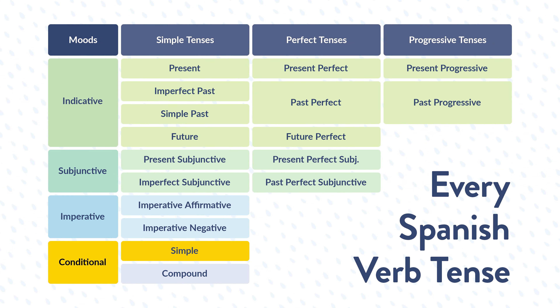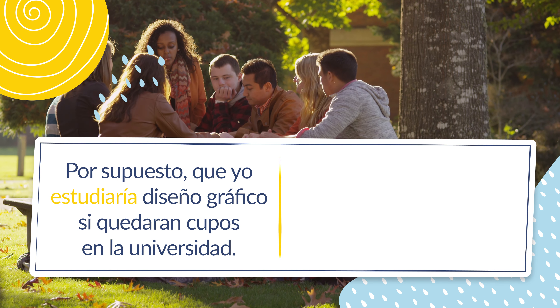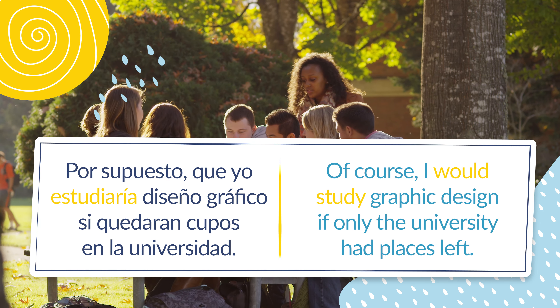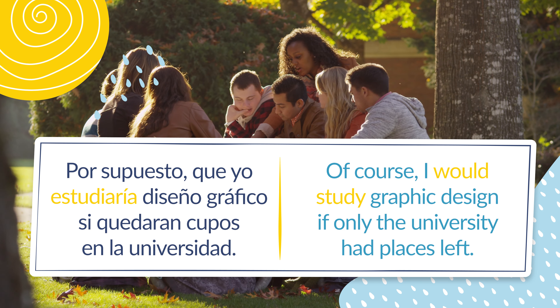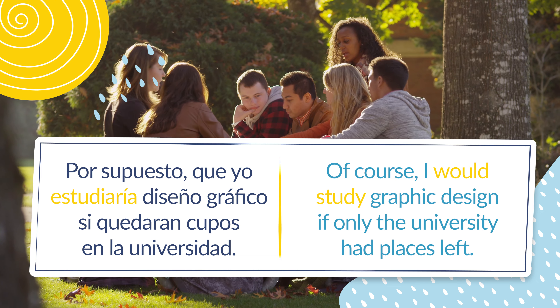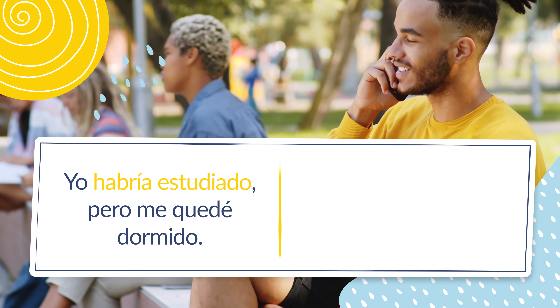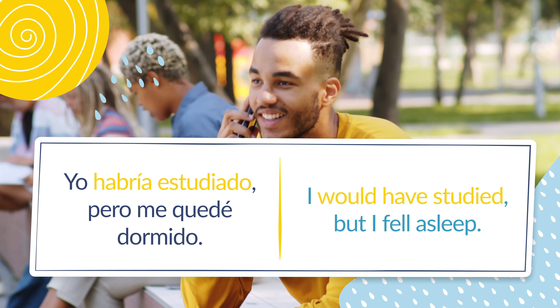In the simple conditional tense, we only have one action verb conjugated in conditional. For instance, Por supuesto que yo estudiaría diseño gráfico si quedaran cupos en la universidad — of course I would study graphic design if only the university had places left. This is a perfect example of simple conditional tense. With a conditional compound tense, we conjugate the verb haber in conditional and then follow it with the action verb in participle. This looks something like: Yo habría estudiado, pero me quedé dormido — I would have studied, but I fell asleep.